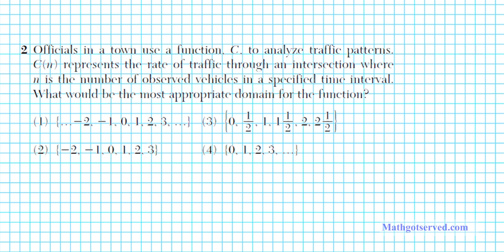Alright, let's take a look at question two. It says officials in a town use a function c to analyze traffic patterns. C of n represents the rate of traffic through an intersection where n is the number of observed vehicles in a specified time interval. What would be the most appropriate domain for the function? You want to remember what domain means — domain basically means acceptable inputs into the function.